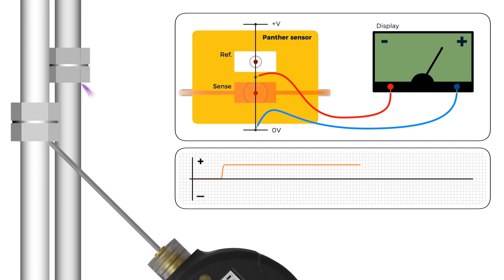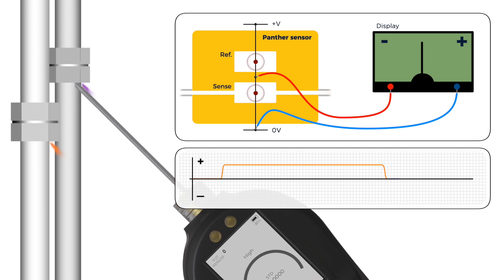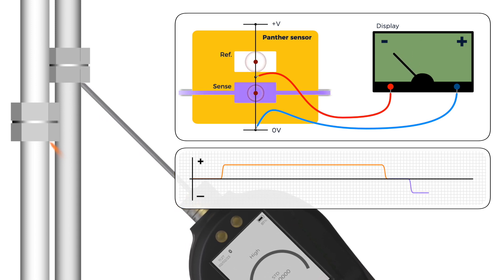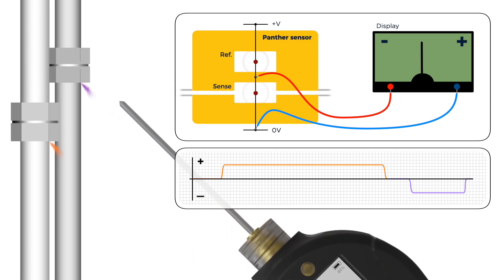This means the sensor can experience a negative or positive response depending on the gas. That said, to avoid confusion, the default setting on the Panther displays all readings as positive.